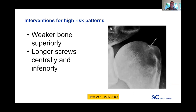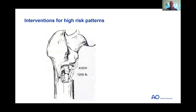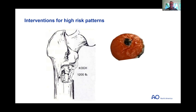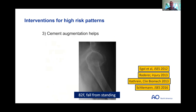Why does this work? There's weaker bone superiorly in the head; we can get longer screws centrally and inferiorly, and longer implants are generally more stable. The old AO principle of a blade plate applies here — with a rotten tomato we don't want to hold it from the top, we want to support it with a broad-based implant at its base.